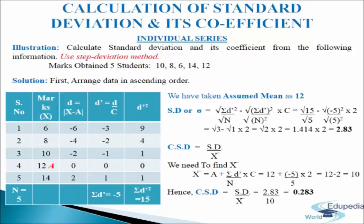In the third column d = x − a. With a = 12: 6 − 12 = −6, 8 − 12 = −4, 10 − 12 = −2, 12 − 12 = 0, 14 − 12 = 2. In the fourth column d' = d / c. We have taken common factor c = 2. So: −6/2 = −3, −4/2 = −2, −2/2 = −1, 0/2 = 0, 2/2 = 1. We get σd' = −5.